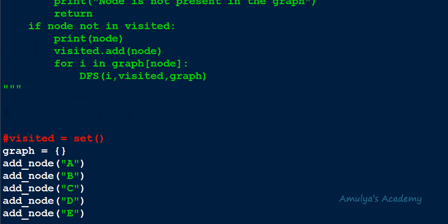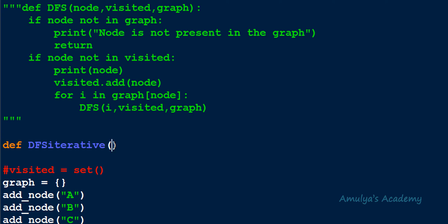Next we need to define the iterative function for the DFS algorithm. I'll write 'def DFS_iterative' and mention the parameters. In the DFS algorithm we first need a starting node — we need to know from where to start the traversal. The user will choose the starting node when calling the function, so the first parameter will be the starting node, just like in the recursive function.